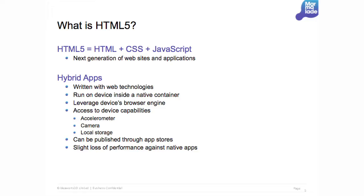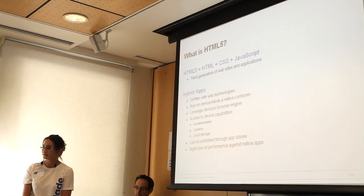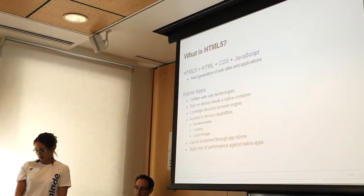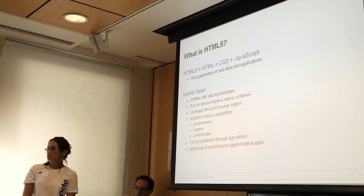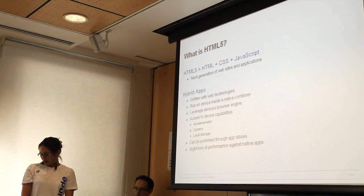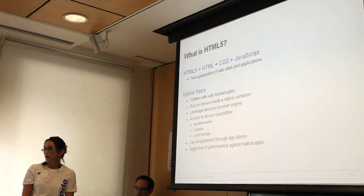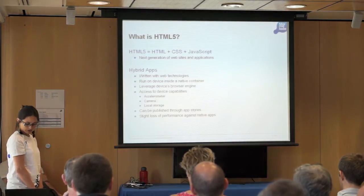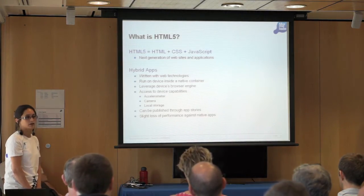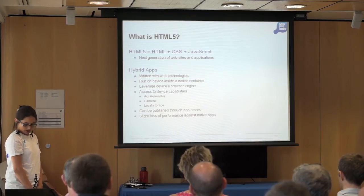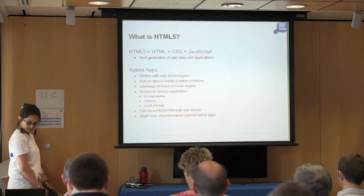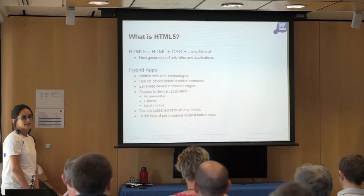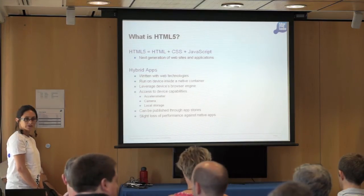So what are hybrid apps? Hybrid apps are basically written using web technologies. Like native apps, they run on device but in a native container. They leverage the device's browser engine to render HTML and to process JavaScript. The main advantage they have over pure web apps is access to device capabilities via a web-to-native abstraction layer. Another big advantage is that they are publishable on app stores. When compared against native apps, there is a slight loss of performance with hybrid apps.